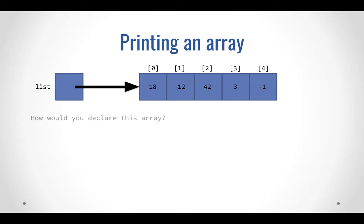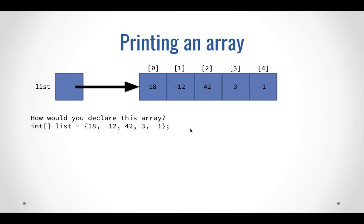The question we find ourselves asking is how would I print an array? Before we get to that, let's decide how we would declare an array. I could say an array of int called list equals new int of length five, then populate list[0] = 18, list[1] = -12, list[2] = 42, list[3] = 3, list[4] = -1 — that's six commands. Or, as I recommend, let's use the shortcut: an array of int called list containing these five elements directly.